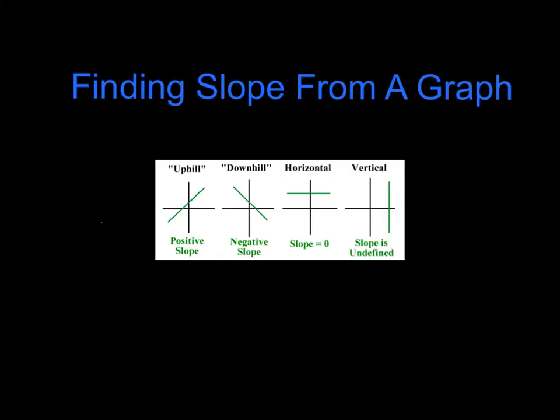Introduction to slope. Finding slope from a graph. Slope is the incline or steepness of a line. Lines that appear to go uphill from left to right have a positive slope. Downhill from left to right have a negative slope. Horizontal lines have a slope of zero, and vertical lines are undefined.